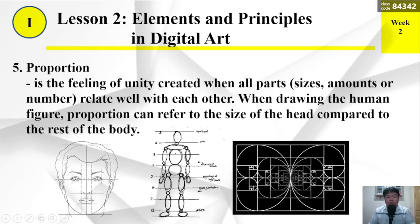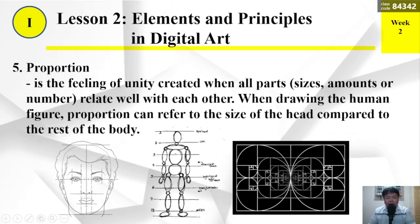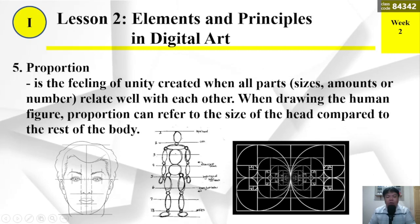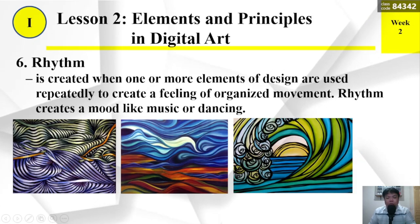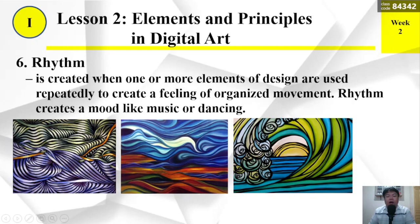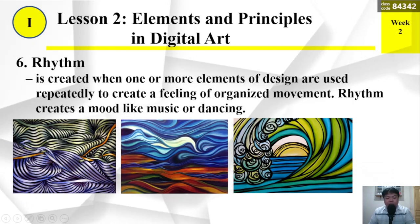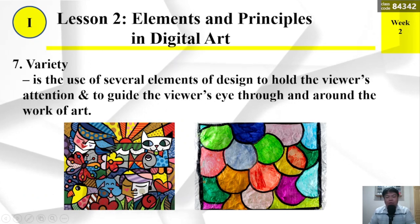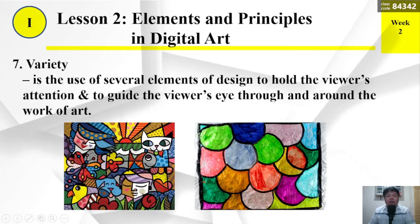Proportion is the feeling of unity created when all parts — sizes, amounts, or numbers — relate well with each other. When drawing the human figure, proportion can refer to the size of the head compared to the rest of the body. Rhythm is created when one or more elements of design are used repeatedly to create a feeling of organized movement. Rhythm creates a mood, like music or dancing.